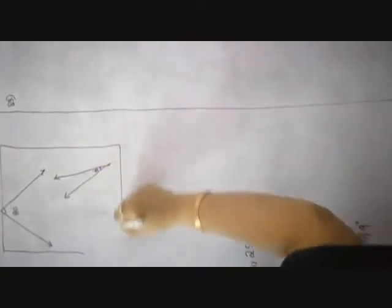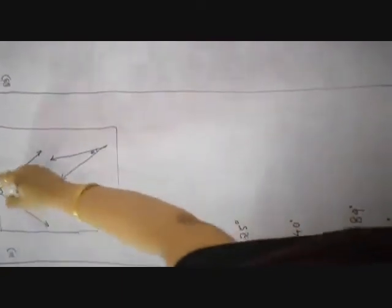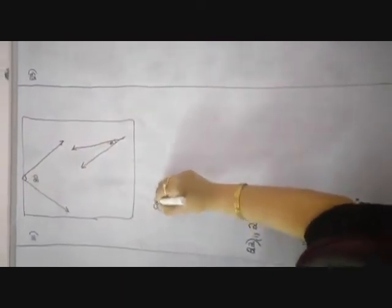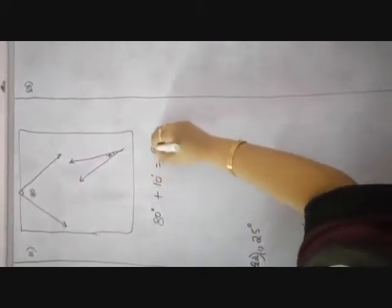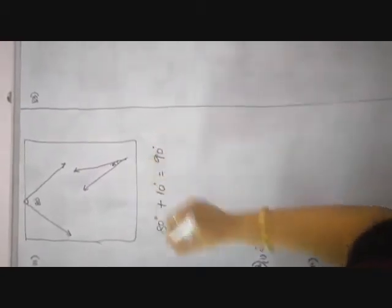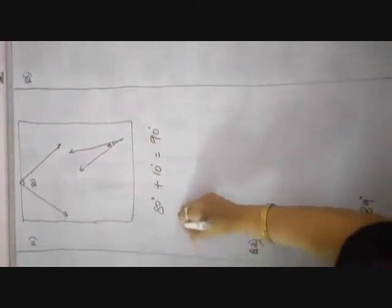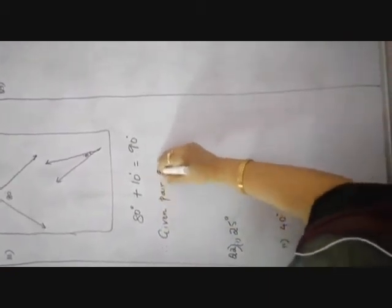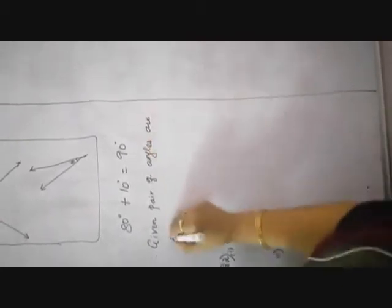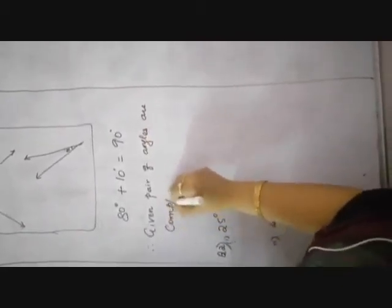Come to the third point, children. The box is given. 80 degrees plus 10 degrees, which is equal to 90 degrees. Therefore, the given pair of angles are complementary angles.